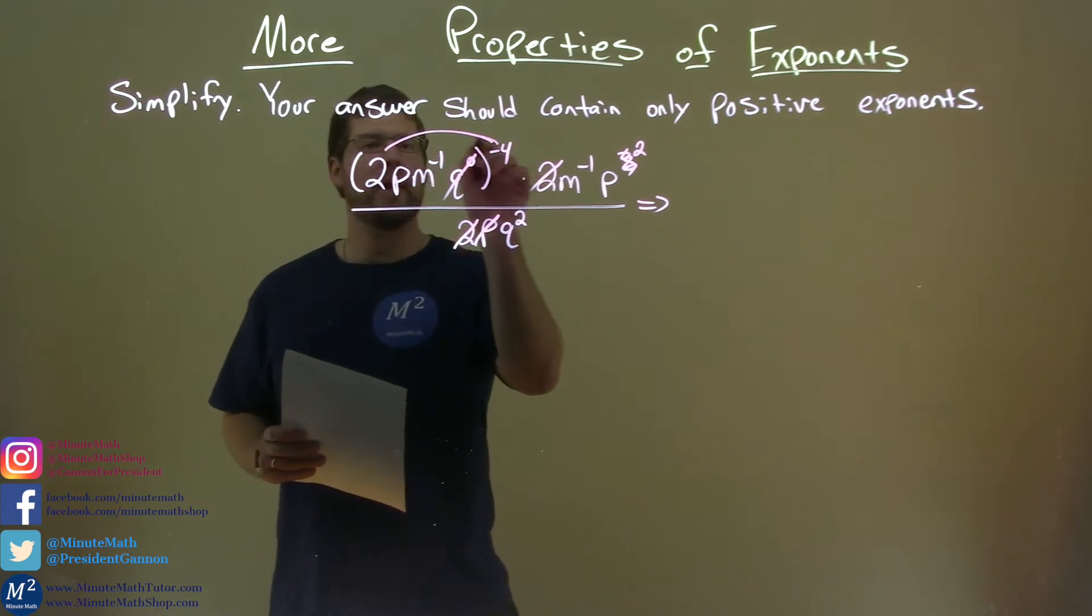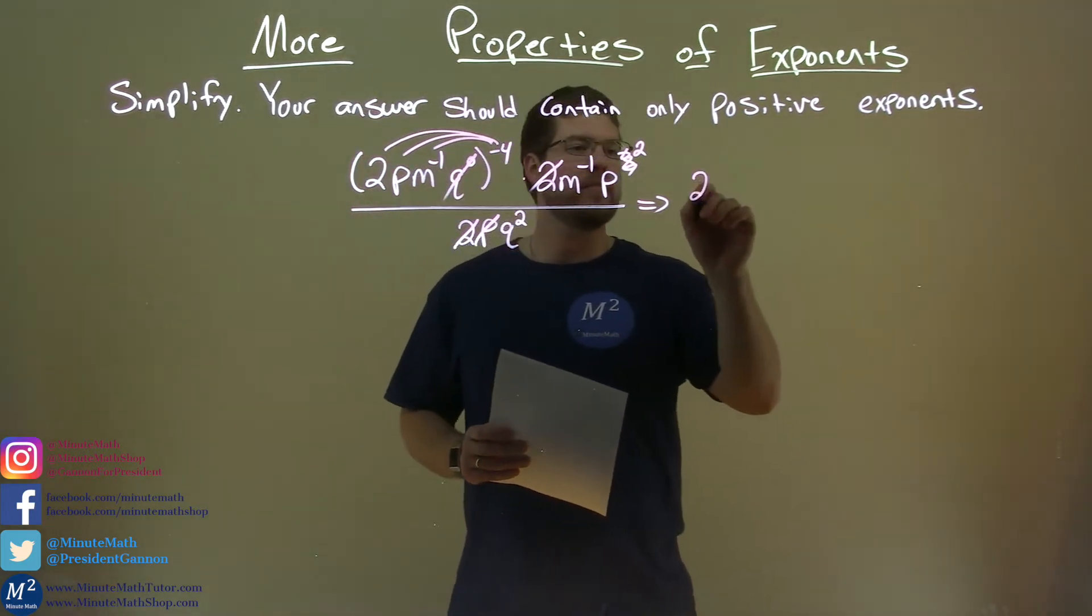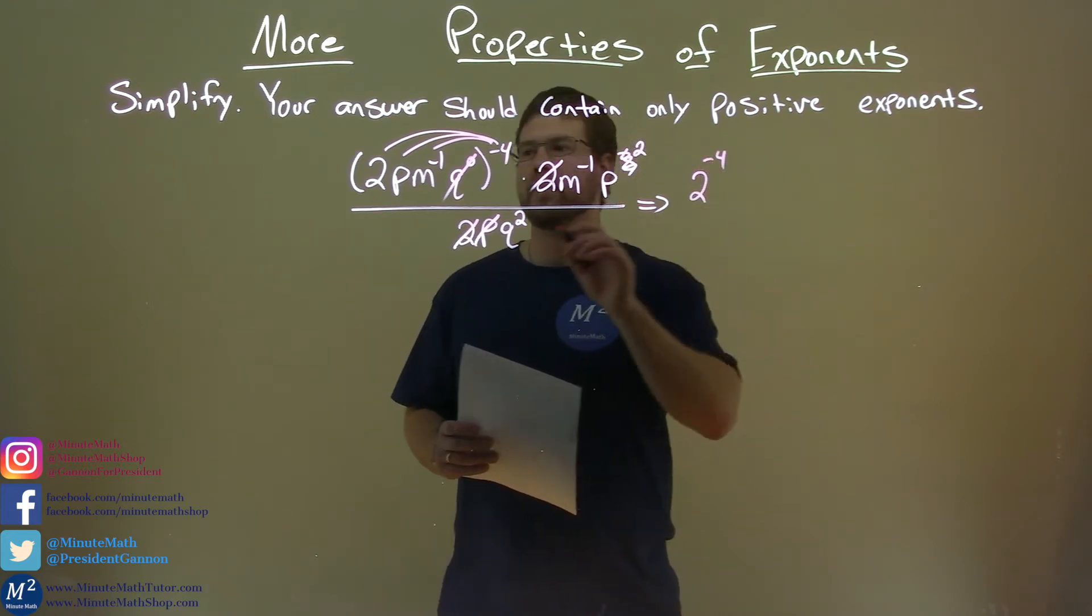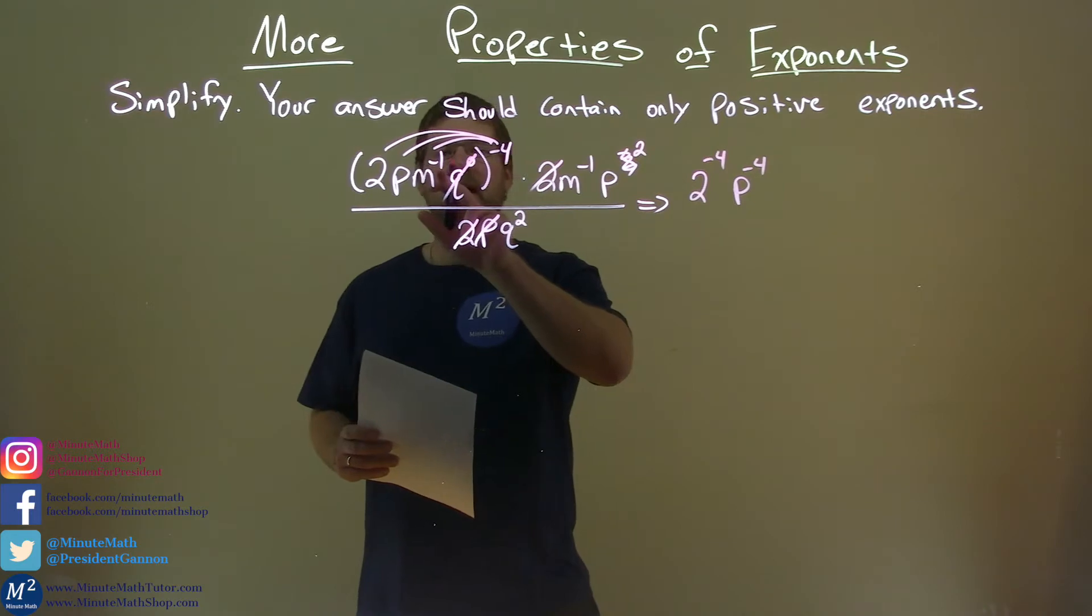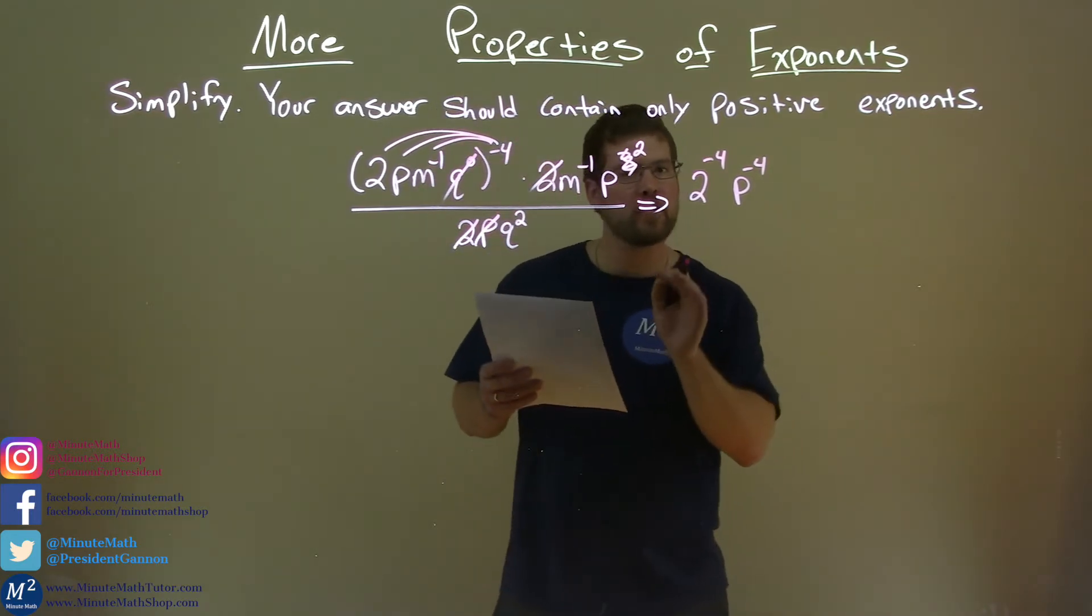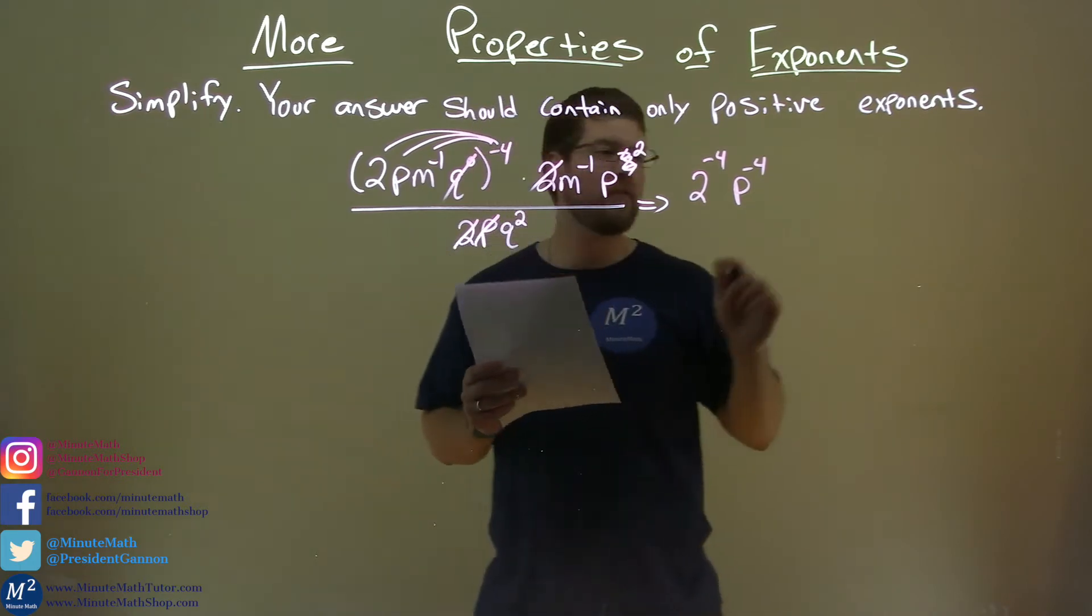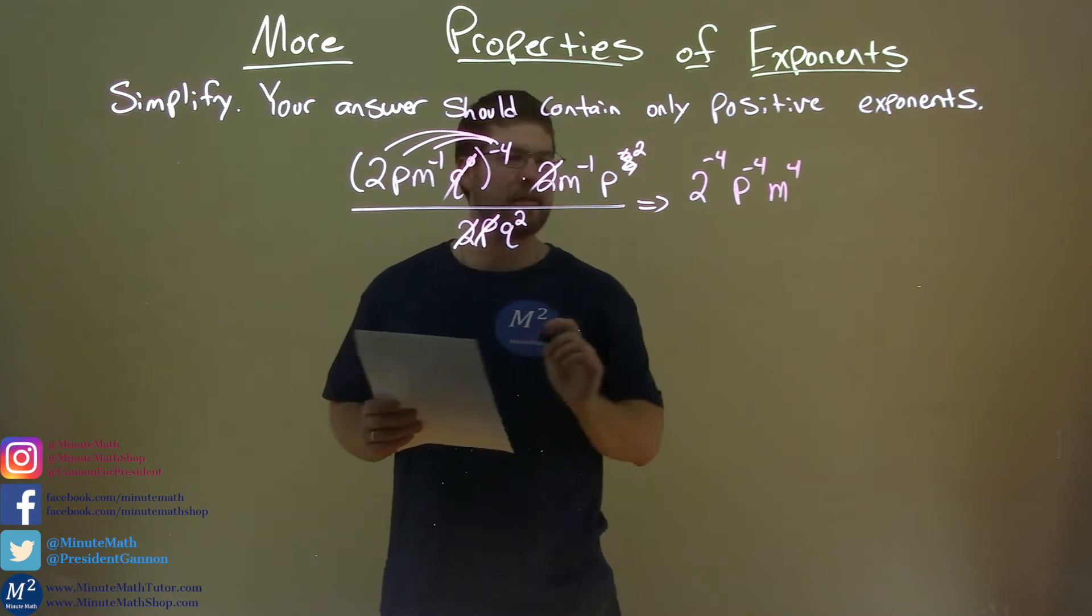Let's distribute the negative 4th power to our parts that are left in that parentheses. We have 2 to the negative 4th power here, p to the negative 4th power. m to the negative 1 times the negative 4 is a positive 4. Remember, we multiply the exponents here, so we have m to the positive 4th power. Okay, got all that done.